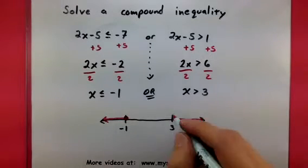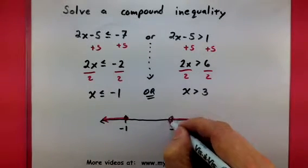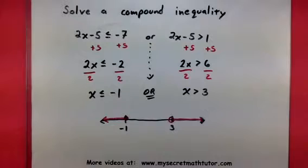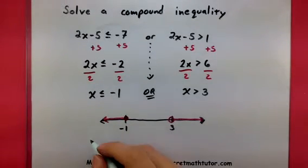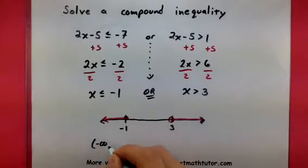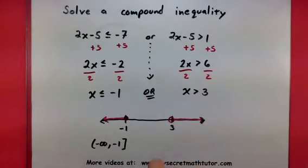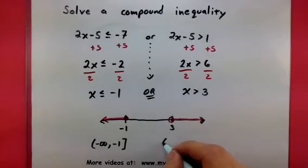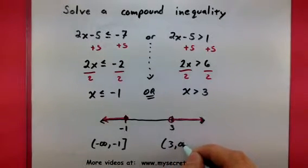And since this one is a strict inequality, I will use a big open circle. So here I have an interval from negative infinity to negative 1, inclusive. And over here I have another interval from 3 to infinity.